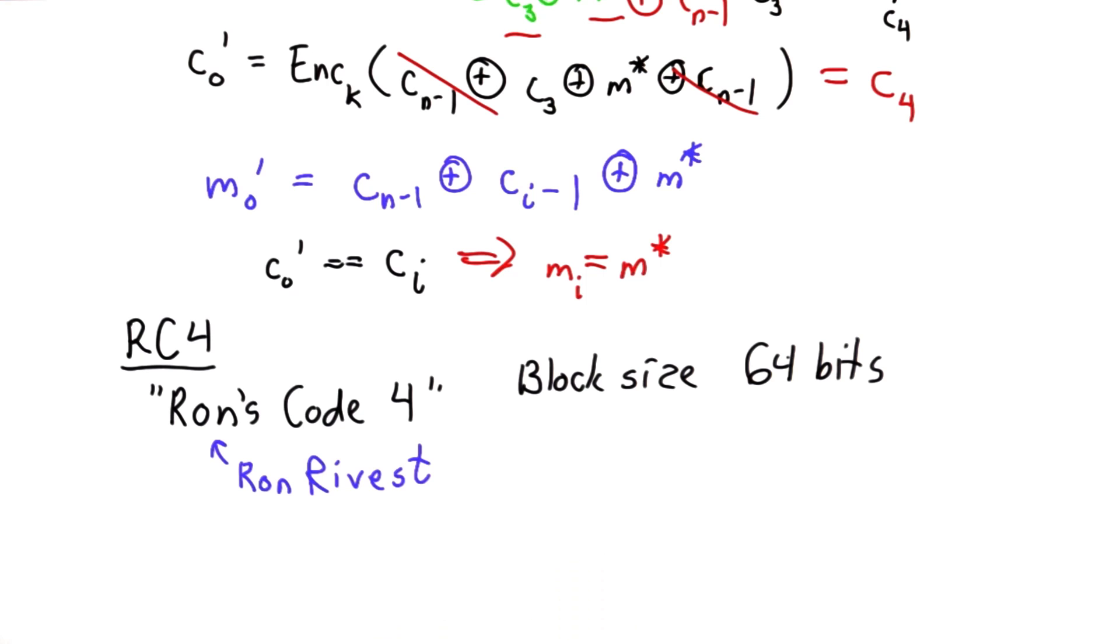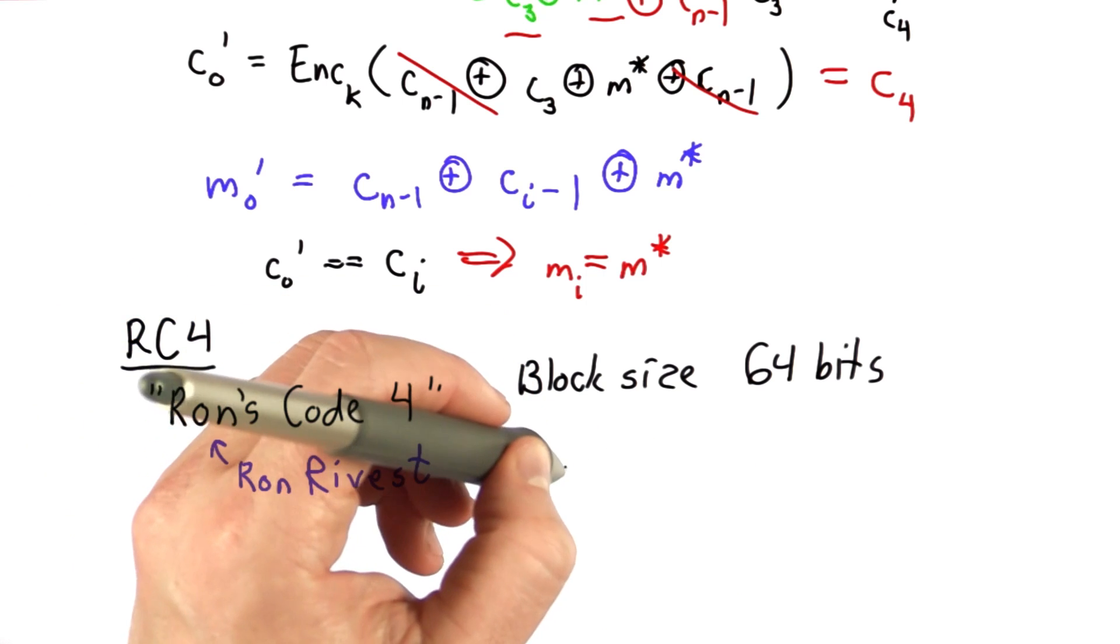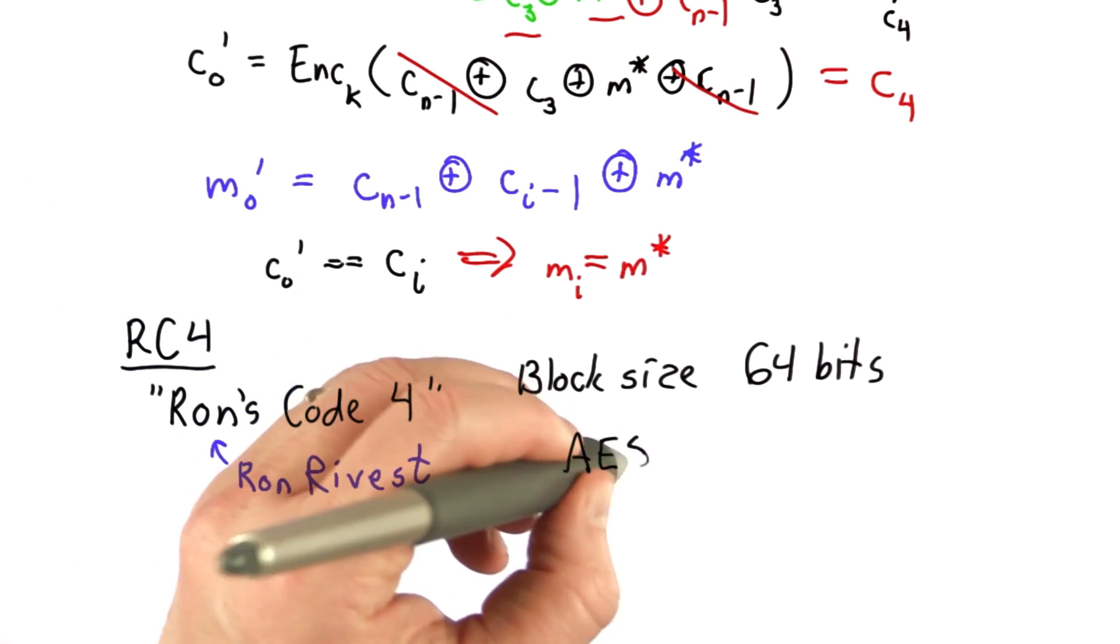The block size typically used in TLS is 64 bits. TLS could also be using AES with a block size of 128 bits.